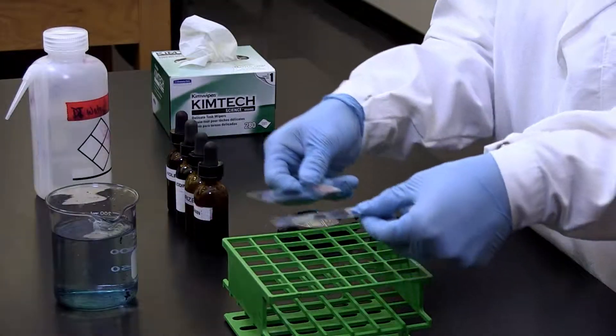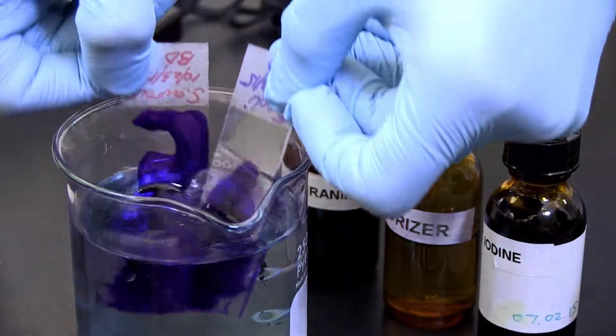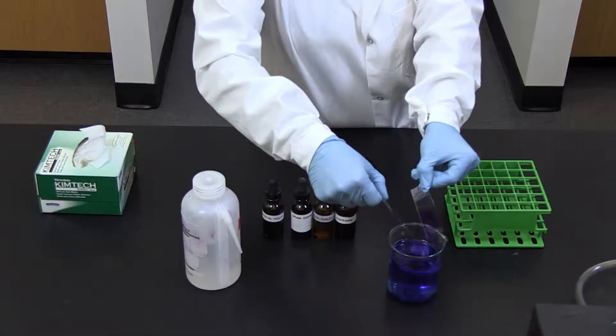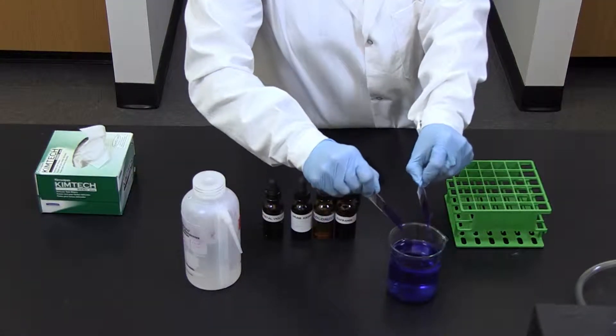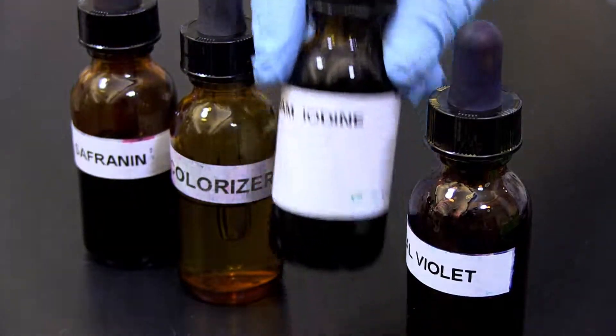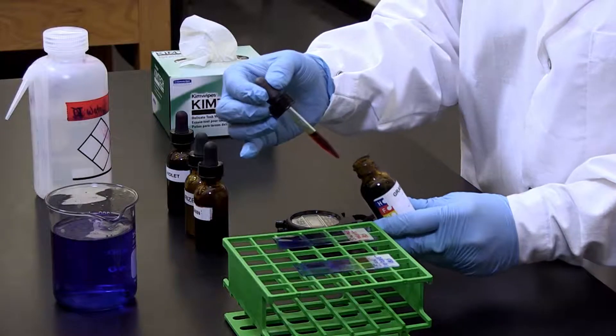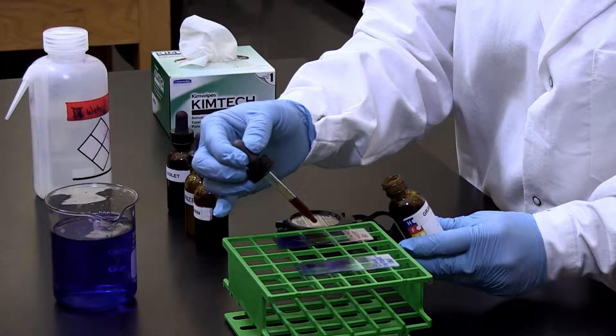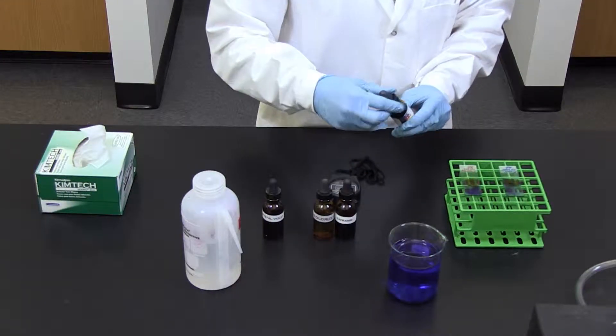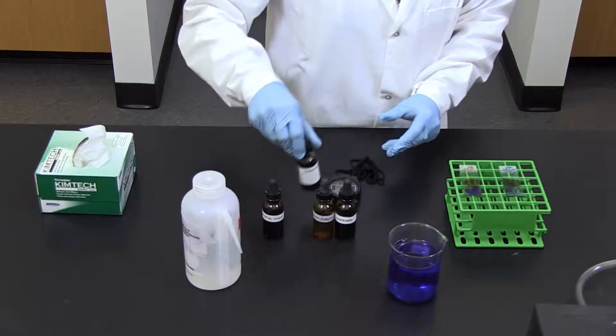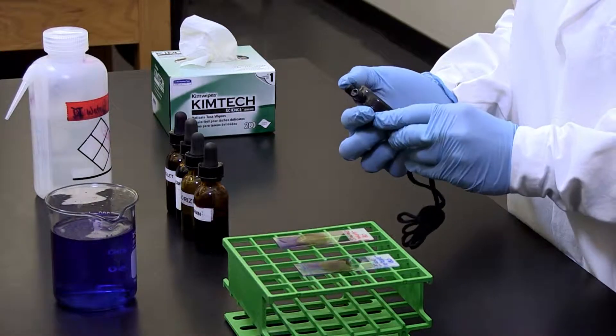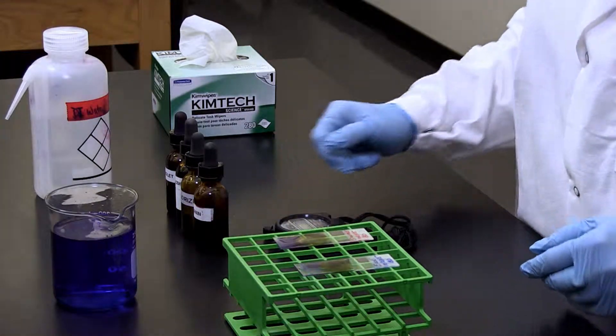Three, briefly, about 3 to 4 seconds, rinse the excess stain from the slides and drain off the excess water. Four, cover the smears with Gram's iodine for 60 seconds. Iodine is added as a mordant, which is a chemical that serves to fix a dye in a staining process. In this case, the iodine binds with the crystal violet to create an insoluble complex within the thick peptidoglycan layer of gram-positive cells.